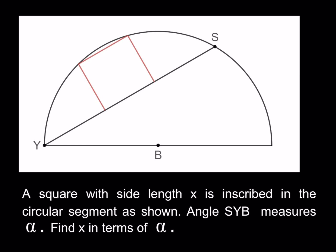We have a square with side length x which is inscribed in a circular segment as shown — it's as if it's on an inclined plane. Angle SYB measures alpha. Find x in terms of alpha. So we're going to find the side length of the square in terms of the angle alpha.